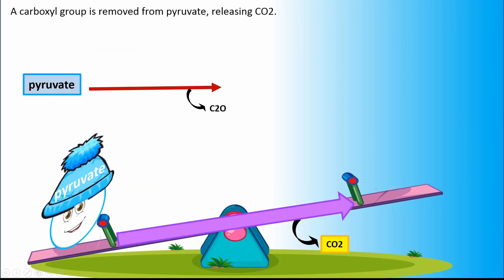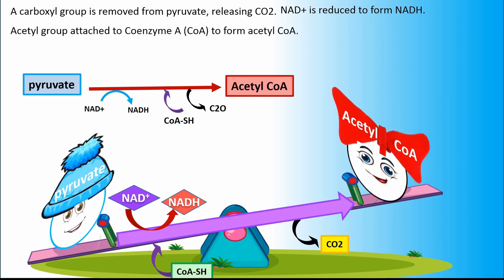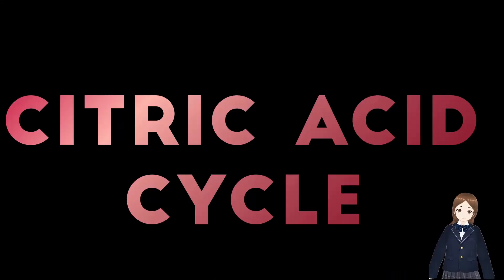A carboxyl group is removed from pyruvate, releasing CO2. NAD+ is reduced to form NADH. An acetyl group is attached to coenzyme A to form acetyl-CoA. The enzyme responsible is the pyruvate dehydrogenase complex.